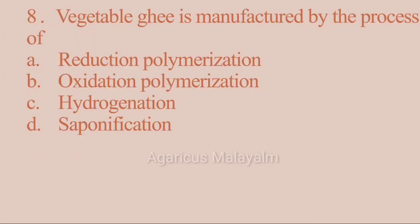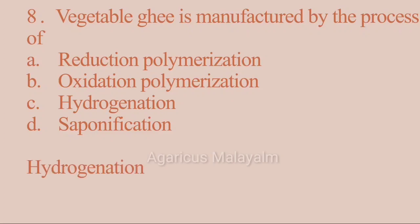Eighth question: Vegetable ghee is manufactured by the process of? Answer options: Option A, Reduction polymerization; Option B, Oxidation polymerization; Option C, Hydrogenation; Option D, Saponification. Correct answer: Option C, Hydrogenation.